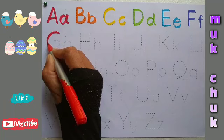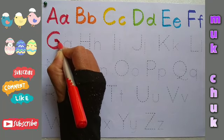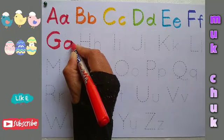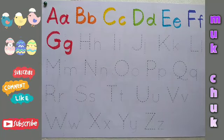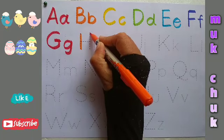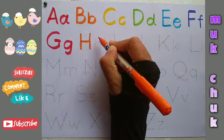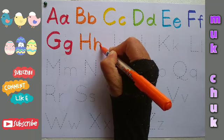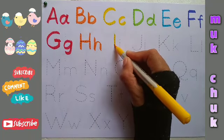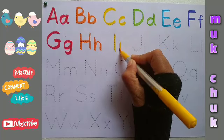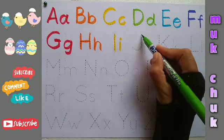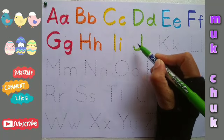G, capital G, small g. G for goat. H, capital H, small h. H for hen. I, capital I, small i. I for ice cream.